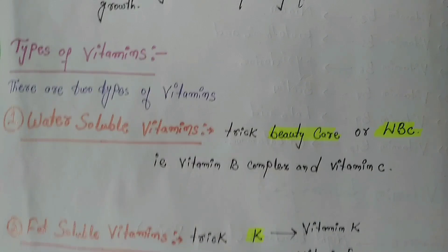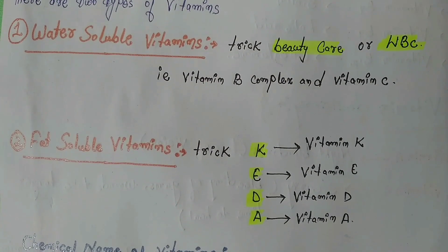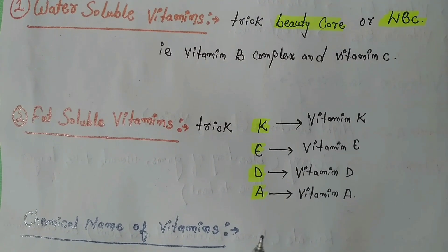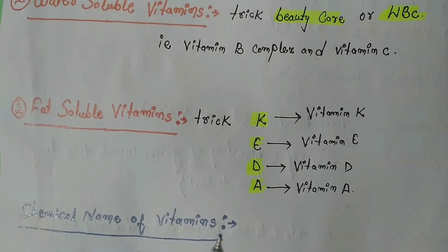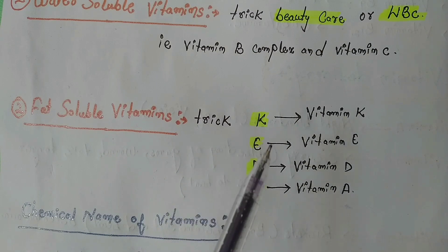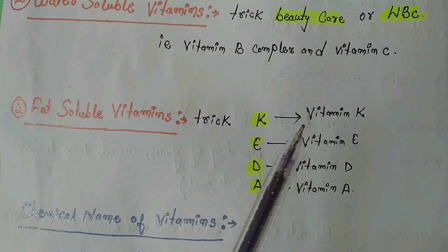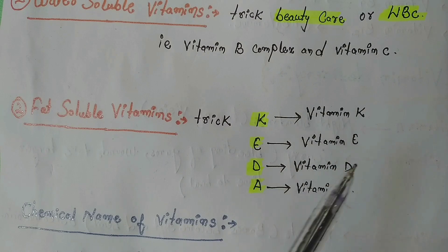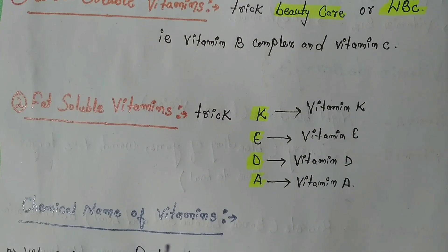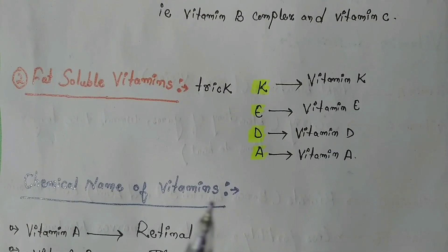The second type is fat-soluble vitamins — these are the vitamins that are soluble in fat. The trick to remember them is 'KEDA': that is Vitamin K, Vitamin E, Vitamin D, and Vitamin A.